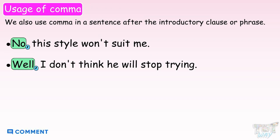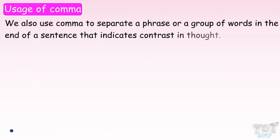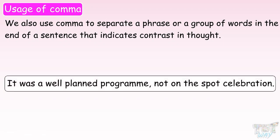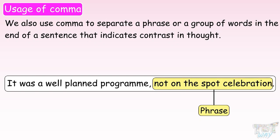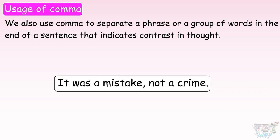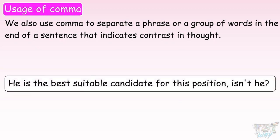Here is another usage of comma. We also use commas to separate a phrase or a group of words at the end of a sentence that indicates contrast in thought. It was a well-planned program, not an on-the-spot celebration. It was a mistake, not a crime. He is the best suitable candidate for this position, isn't he? Here again, we have separated the last phrase which is contrasting from the previous sentence using a comma.